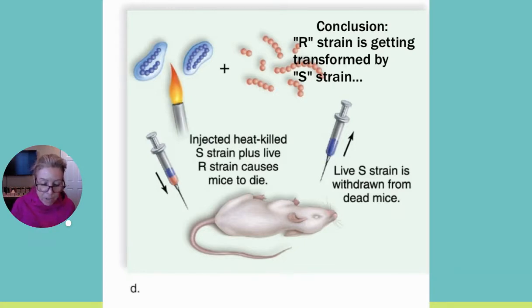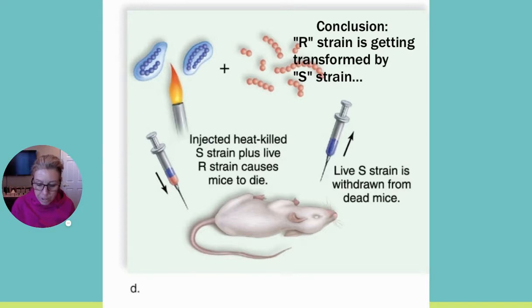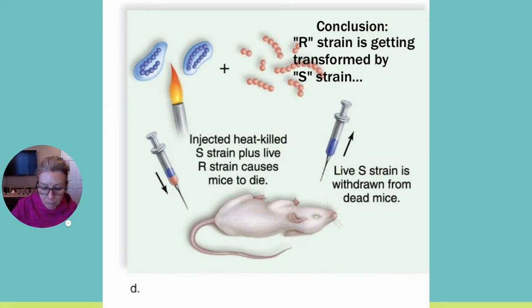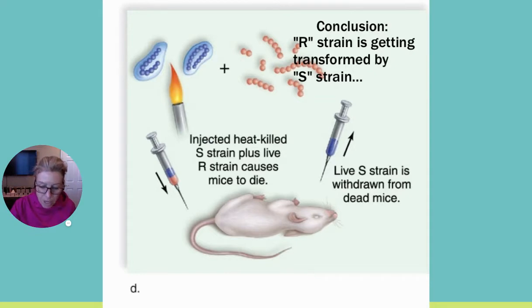What happened? The live R strain must have gotten something from the dead S strain. In Griffith's transformation experiment from the 1920s, strain S is virulent with a mucus capsule; strain R is not virulent and has no capsule. The conclusion was that some substance necessary for the synthesis of the capsule — and therefore virulence — must have passed from the dead S strain to the living R strain, transforming it.